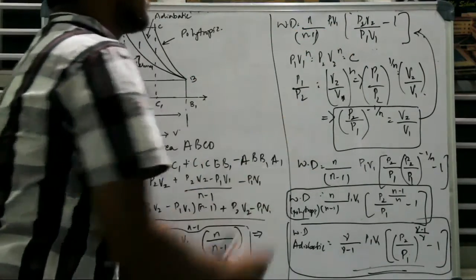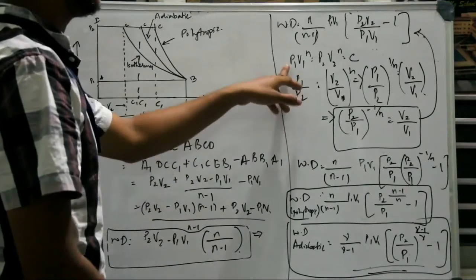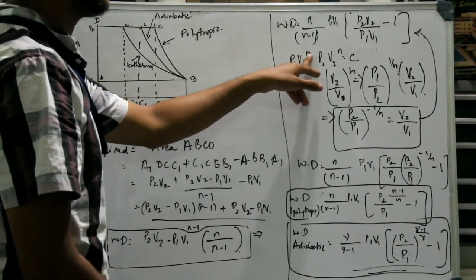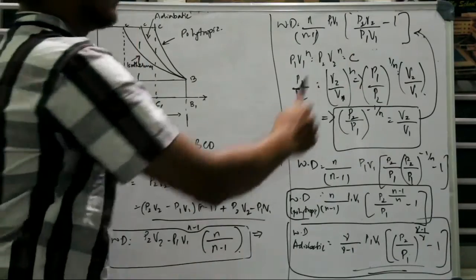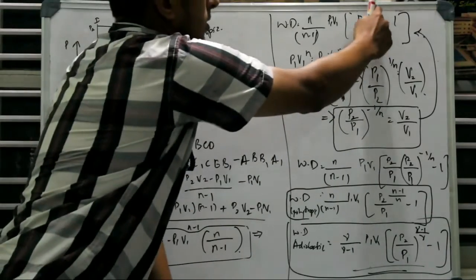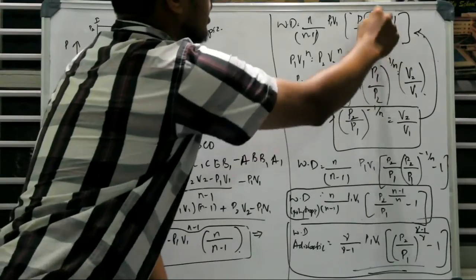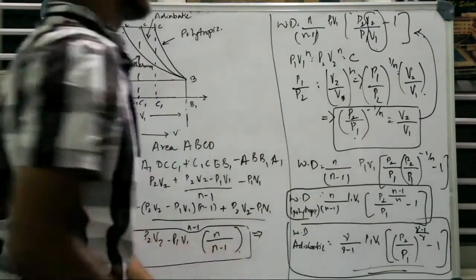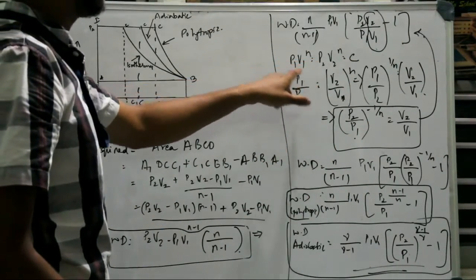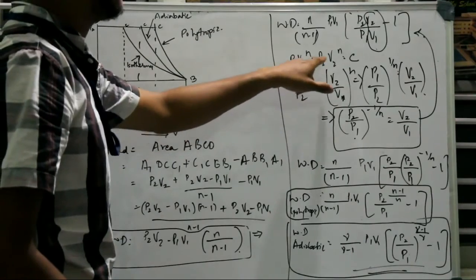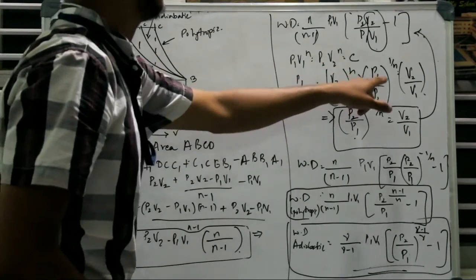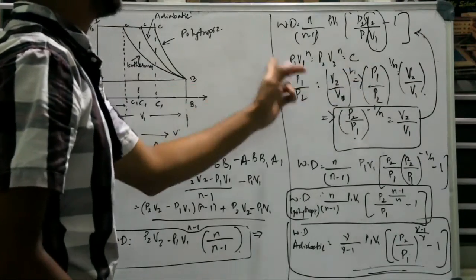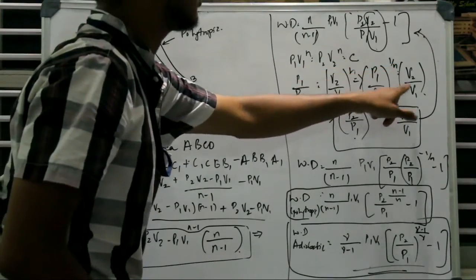Now for polytrophic process, we know that P1 V1 to the power N equals P2 V2 to the power N equals constant. So what we do here is we get the expression for V2 by V1 in terms of P2 by V1. So when we take P1 by P2 is going to be V2 by V1 to the power N, which implies that P1 by P2 to the power 1 by N is equal to V2 by V1.